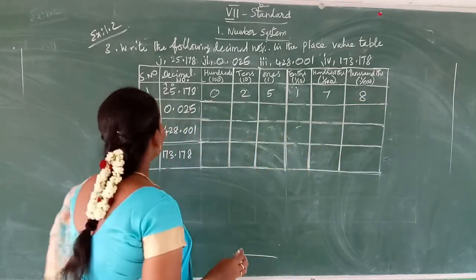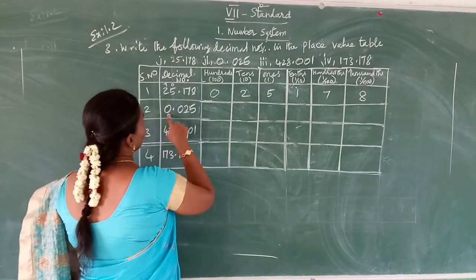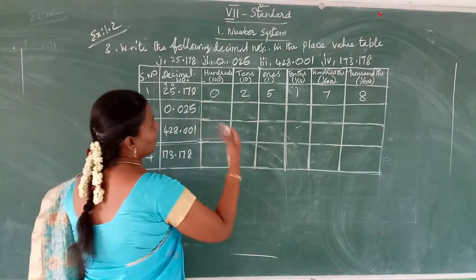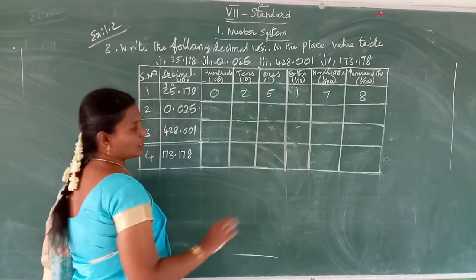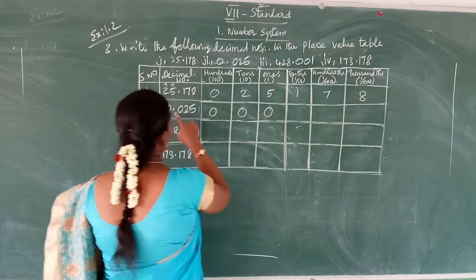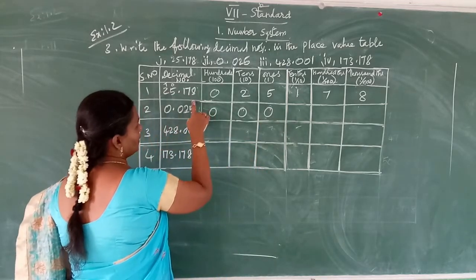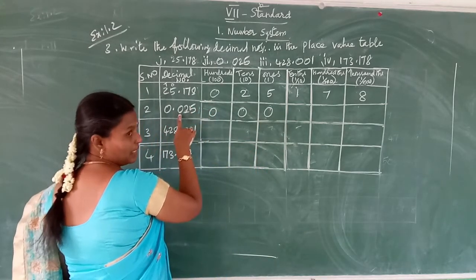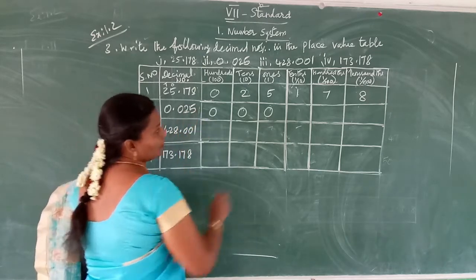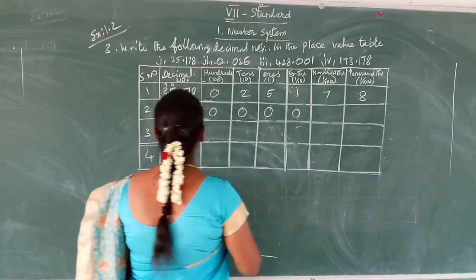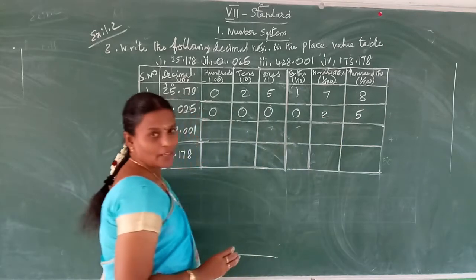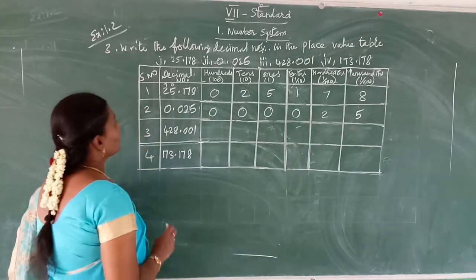See the next one — 0.025. The whole part is only zero, so no hundreds, no tens, no ones. Write zero, zero, zero. Then point — in the decimal part, the tenths space is zero, and the hundredths and thousandths spaces give two and five.